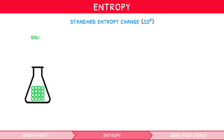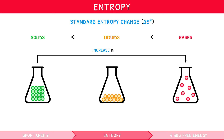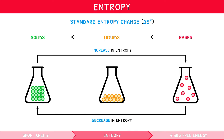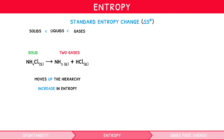We can create a hierarchy and state that the entropy in a gas is greater than a liquid, which is greater than a solid. Therefore, any reaction in which there is a production of a species higher up this hierarchy will result in an increase in entropy. Similarly, production of a species lower down the hierarchy would cause a decrease in entropy. For example, NH4Cl solid goes to NH3 gas plus HCl gas. Here we can see the conversion of a solid to form two gases, which moves up the hierarchy, and therefore there is an increase in entropy — so delta S is positive.